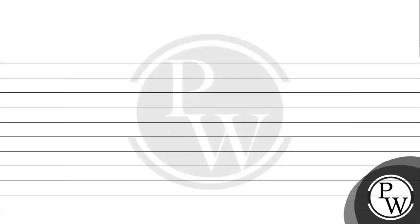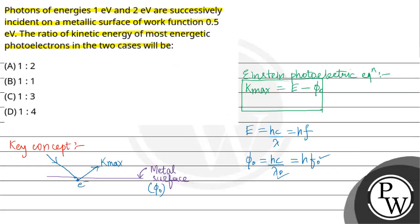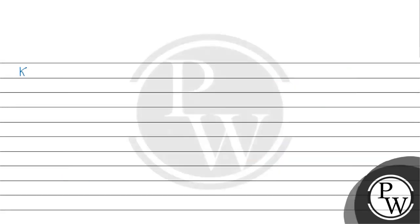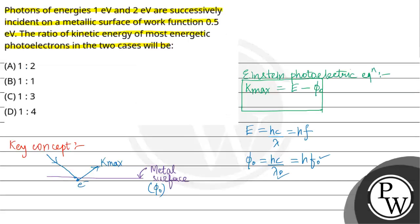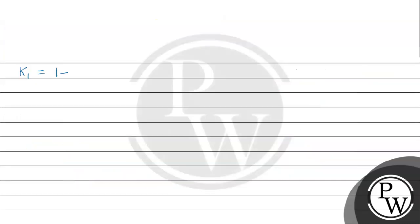In the first case, the kinetic energy of most energetic electrons K1 equals incident energy 1 eV minus work function 0.5 eV, which gives 0.5 eV.